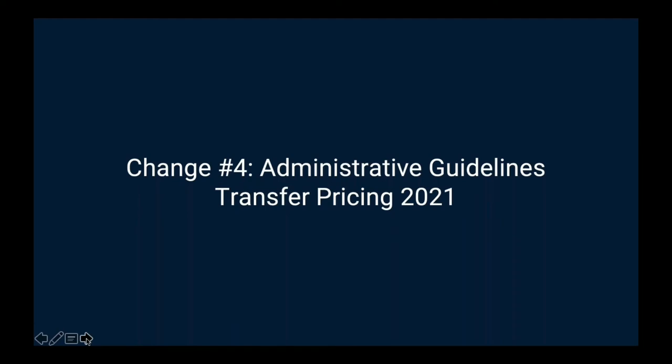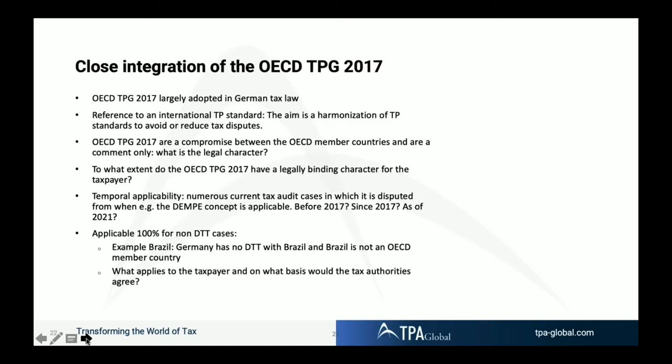The main intention is again to refer as closely as possible to the OECD transfer pricing guidelines, as seen in many chapters. One indication of this is that the document has only 44 pages instead of more than 100 before — they streamlined it by referring as much as possible to the OECD guidelines. The aim is harmonization of global transfer pricing standards for avoiding or reducing disputes.